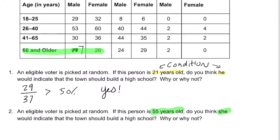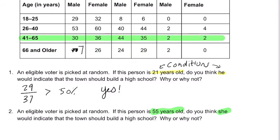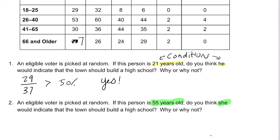So now we're looking at this — and that they're female. That brings us to these intersections here. There are 71 females that we're looking at, and out of those 71 females, 36 said they would. So we have 36 females in that age range that said yes out of 71. I would say yes, just barely — just barely greater than 50%. I would say yes.